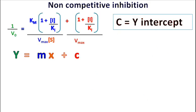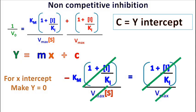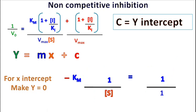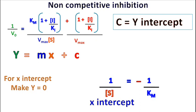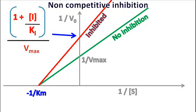To find the x-axis intercept, let's take 1 by v₀ equal to 0. Rearranging the equation, we get minus Km by S is equal to 1, meaning the x-axis intercept will be equal to minus 1 by Km. Hence, in non-competitive inhibition, the Vmax value changes but the Km value remains the same.